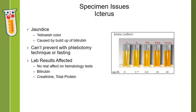Icteric samples will appear yellowish in color, caused by the buildup of bilirubin. You can see in the image the varying degrees of icterus, from 0 to 4+. This really can't be prevented with phlebotomy techniques or fasting, so this is something you kind of have to make notes on occasionally with your results. Lab results that are affected include, of course, bilirubin, but it may also affect your creatinine and total protein. The test results affected are going to vary depending on which test methodology you are using in your lab. Always be mindful of what methodology you're using and how these specimen issues may affect results.